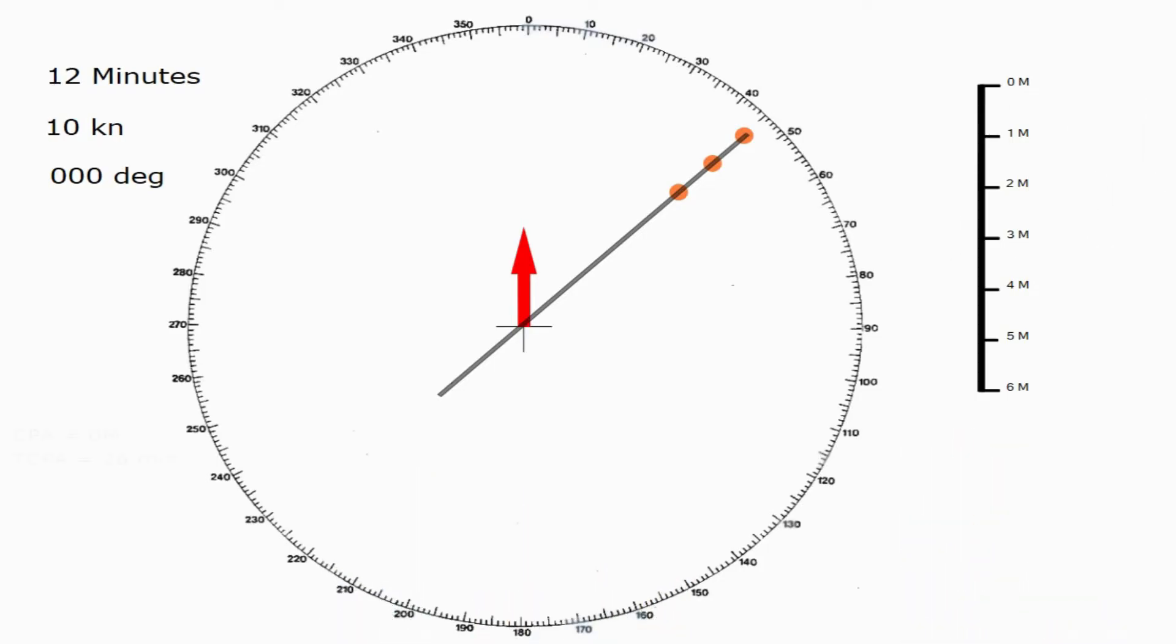We can start writing these down the side. So our CPA, as we've said, is 0, and our time to the closest point of approach is 26 minutes.